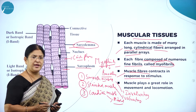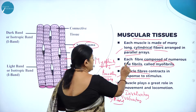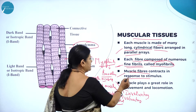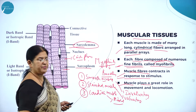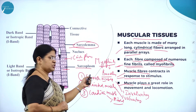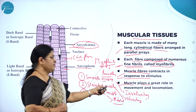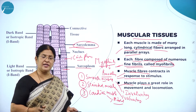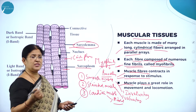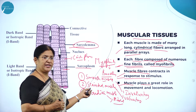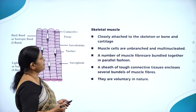Muscular tissue is one very important type of animal tissue and each muscle is made up of many long cylindrical fibers arranged in parallel arrays. Each fiber is composed of numerous fine fibrils called myofibrils. Muscle fibers contract in response to stimulus, and muscle plays a great role in movement and locomotion. The three types are smooth muscle, striated muscle, and cardiac muscles. Smooth muscles are also called unstriated muscles and are involuntary in function. Striated muscles are under the control of the will — actions like standing, moving, and running are mediated by striated muscles. Cardiac muscles are found in the heart and are mixed. Moving on to skeletal muscle.